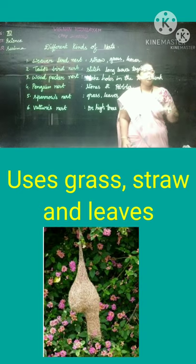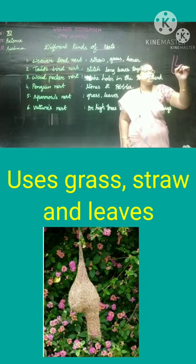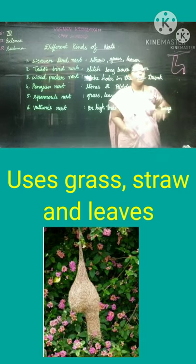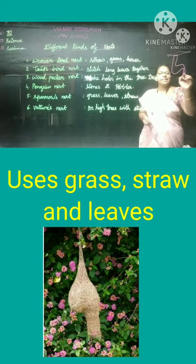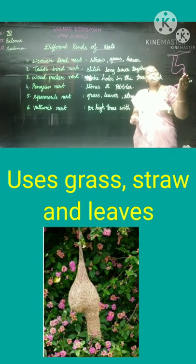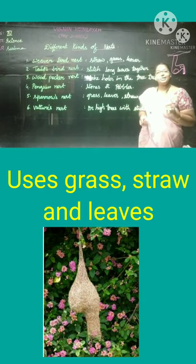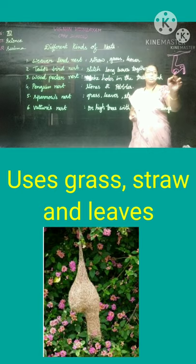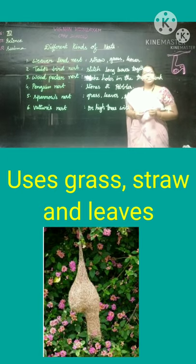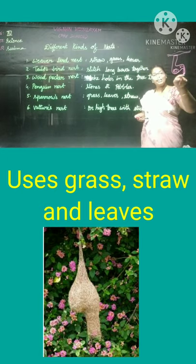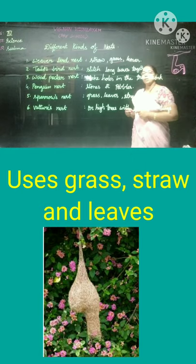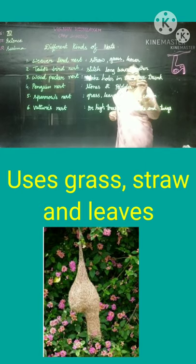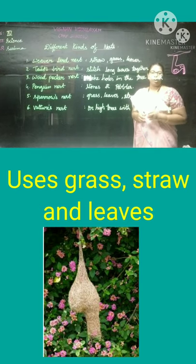This weaver bird makes its nest with straws, grass, and leaves. The nest will be in this shape — it hangs from a branch and has a small hole so that the bird can enter, lay its eggs, and stay inside. The nest is left hanging like this because it helps save the eggs and baby chicks from snakes.